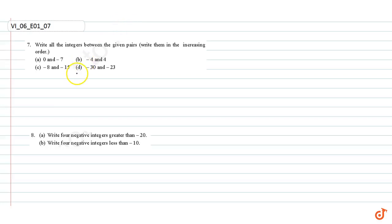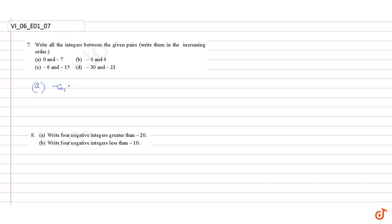In this video we are going to solve question number seven and eight. Question number seven: write all the integers between the given pairs, in increasing order. Part a: between zero and minus seven — minus six, minus five, minus four, minus three, minus two, and minus one. These are arranged in increasing order.